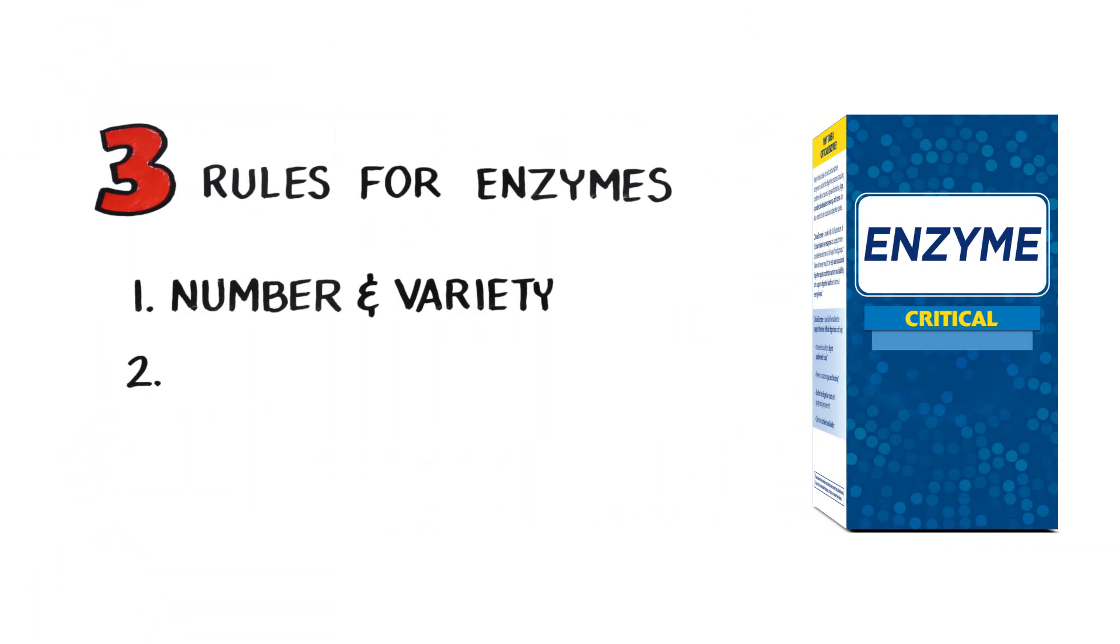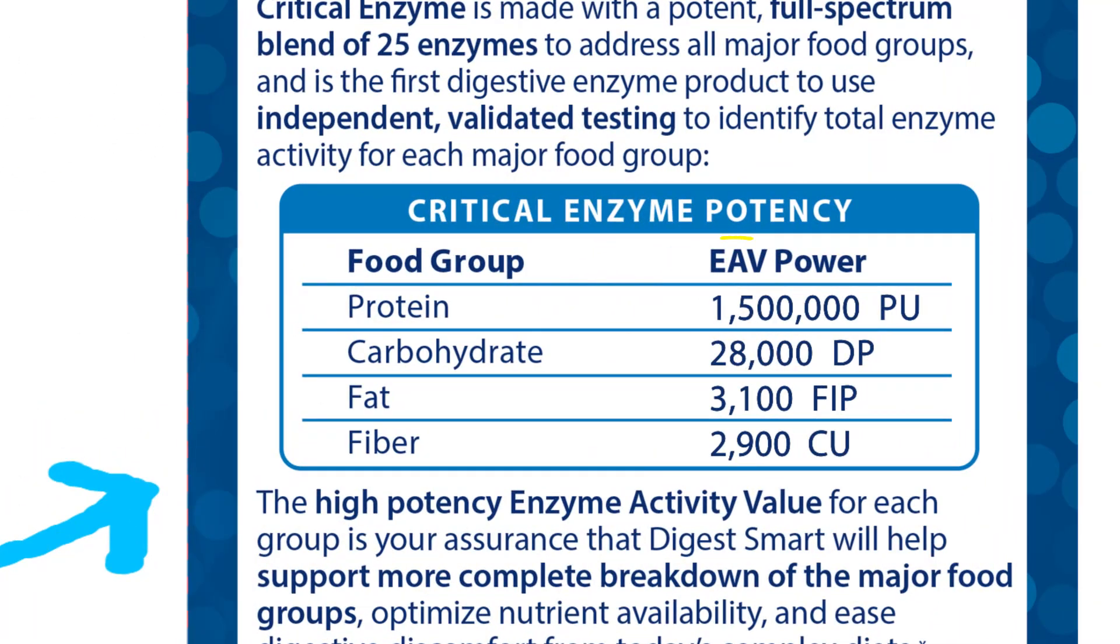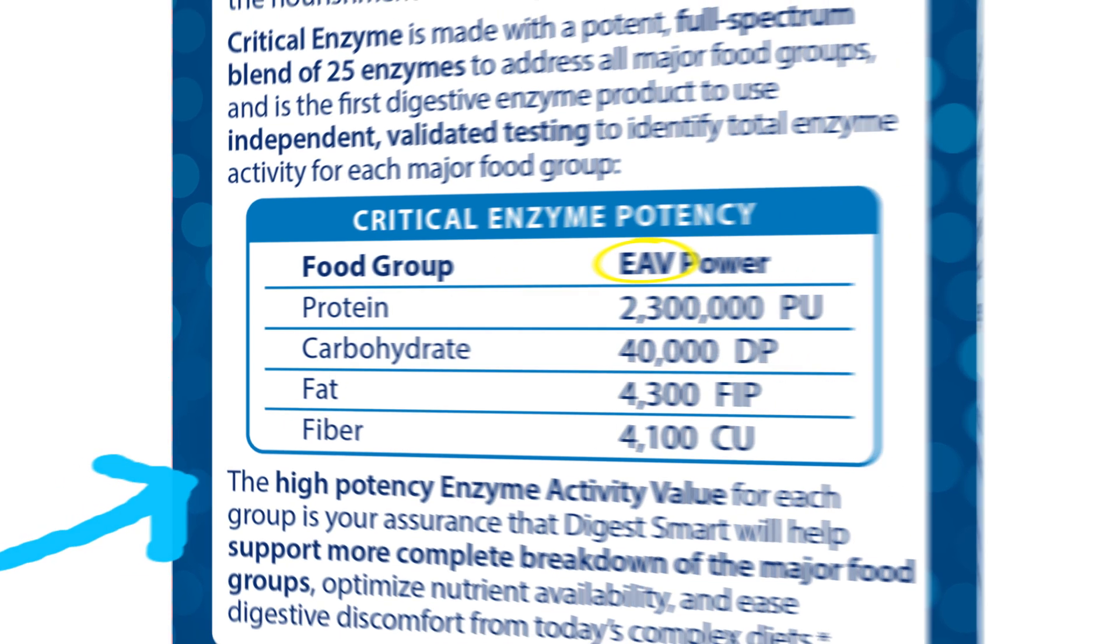The second rule is high potency, also known as the total enzyme activity value or EAV. Think of EAV as the total digestive power of the enzyme formula. The higher the EAV, the more effective an enzyme formula will be in improving your digestion.